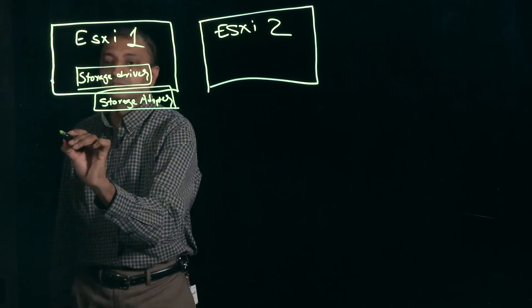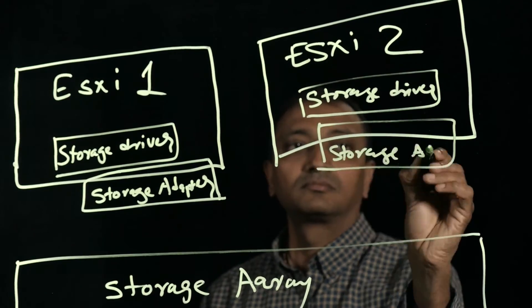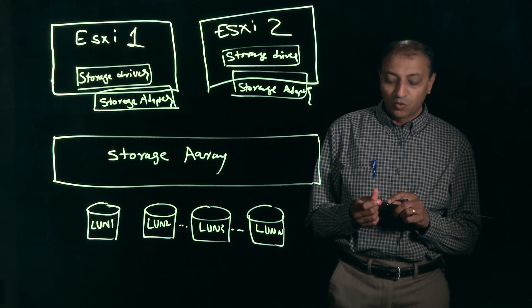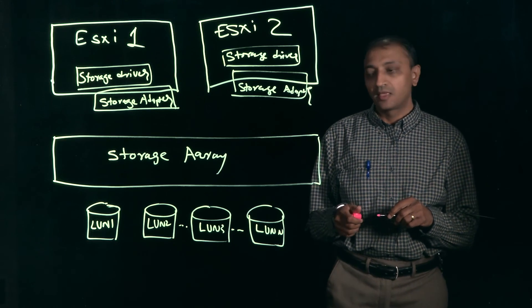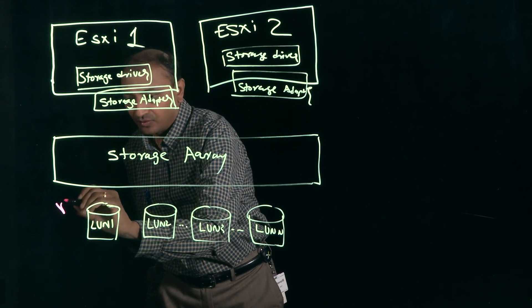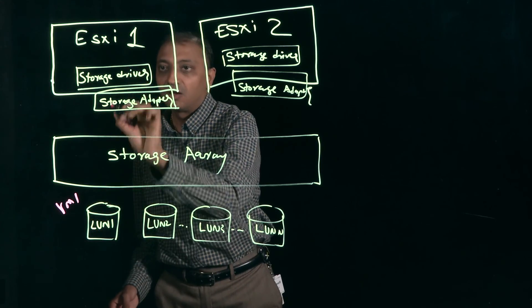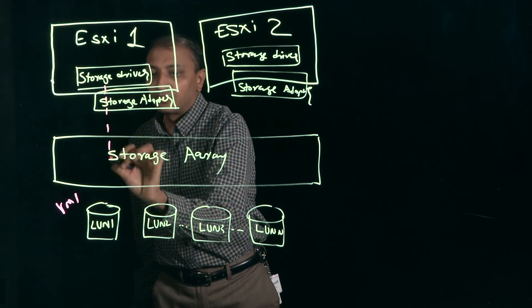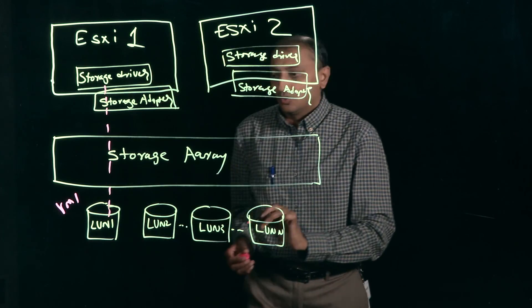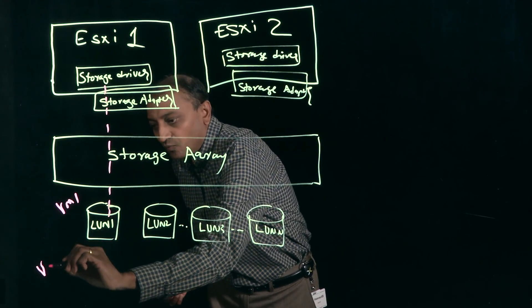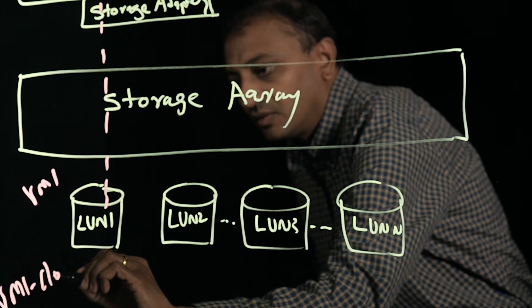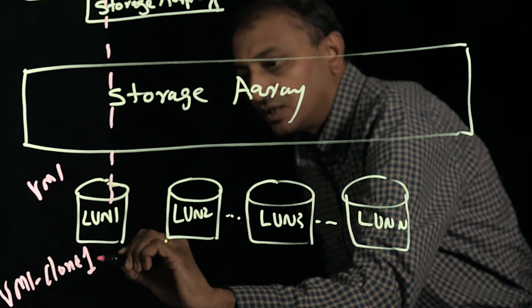Let's understand how ESXi can leverage VAAI plugin to perform some storage operations such as disk cloning. Let's consider that we want to make a disk cloning of a virtual machine called VM-1, which resides on LUN-1 of this hypervisor. Consider a clone is called VM-1-Clone-1, which is also going to be on the same LUN.